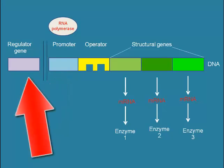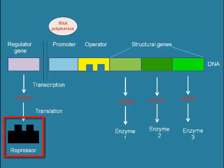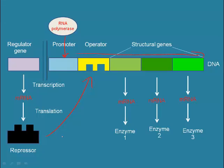Further upstream of these genes is the regulator gene, some distance away on the DNA. It regulates the activity of the structural genes and codes for a repressor protein, which normally, when glucose is present, actively binds to the operator and prevents RNA polymerase from binding to the promoter and transcribing the genes for lactose metabolism. The repressor protein is always coded for and is therefore always present.